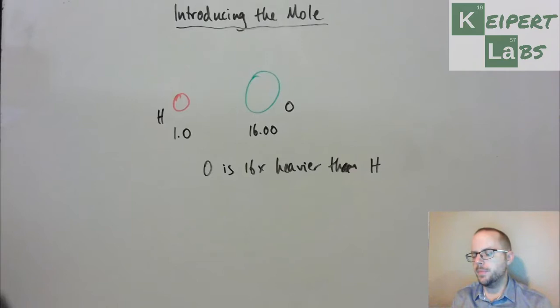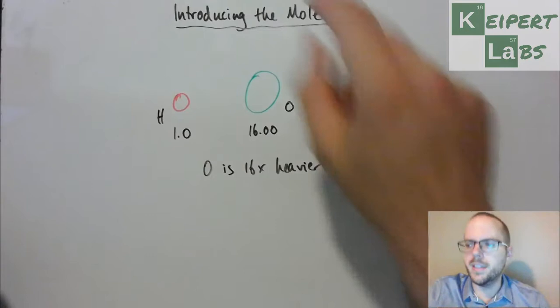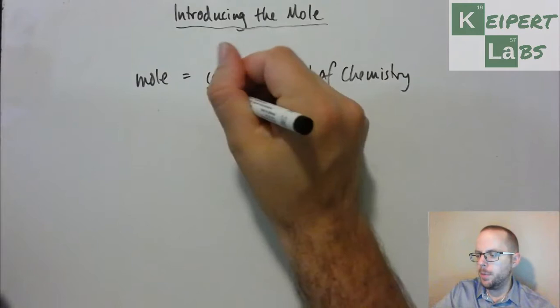And so we're still kind of stuck with the same sort of problem of recognizing, how do we know when we have measured out a specific number of particles? And therefore, how many are we dealing with here? And so what chemists did was they introduced this concept of the mole as the counting unit of chemistry.